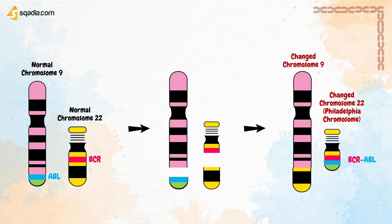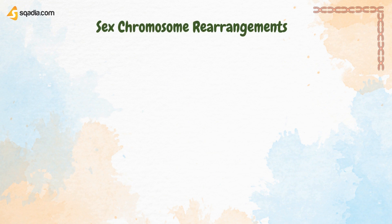Breakage of normal chromosomes 9 and 22 occurs, producing a changed chromosome 9 and a changed chromosome 22 — the Philadelphia chromosome — which contains the breakpoint cluster region fused with Abelson sequences. The Philadelphia chromosome is an abnormal chromosome associated with chronic myelogenous leukemia.